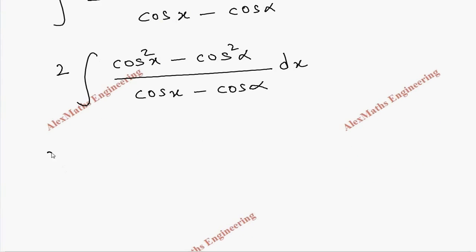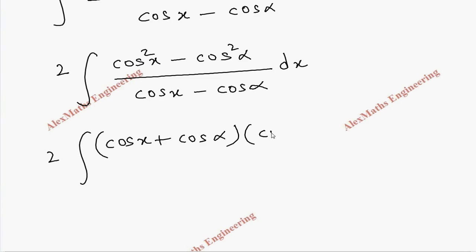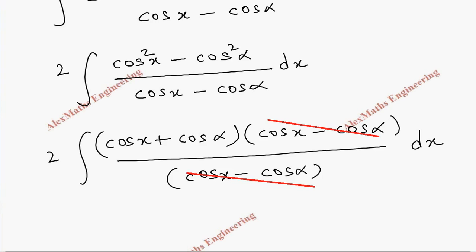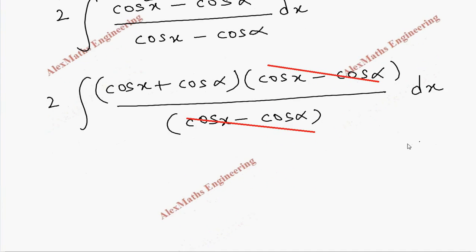Once again the numerator — which simplifies to 2cos²x − 2cos²α — is split into (a + b)(a − b) form: (cos x + cos α)(cos x − cos α), divided by the denominator (cos x − cos α). We can cancel (cos x − cos α), leaving (cos x + cos α).